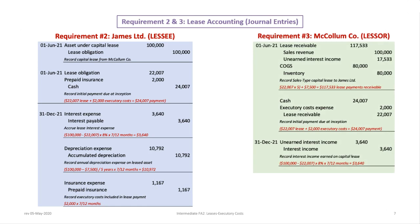Now we'll look at requirement three — the journal entries from the lessor's perspective. We debit the lease receivable for $117,532, which is the $22,007 payment excluding executory costs times five years plus the residual. Sales revenue is $100,000. It cost $80,000 to make, so we credit inventory for $80,000 and debit cost of goods sold. These two should always be the same, and the balancing amount is unearned interest income of $17,532.